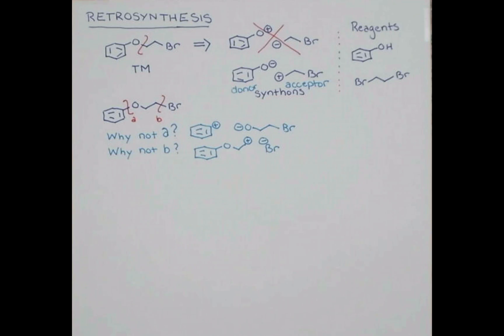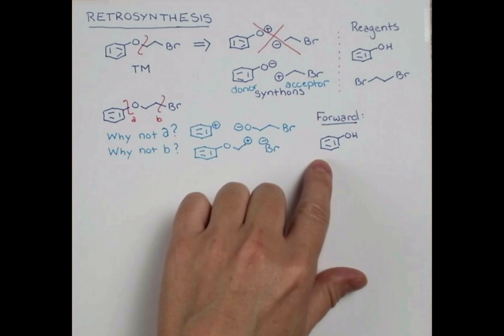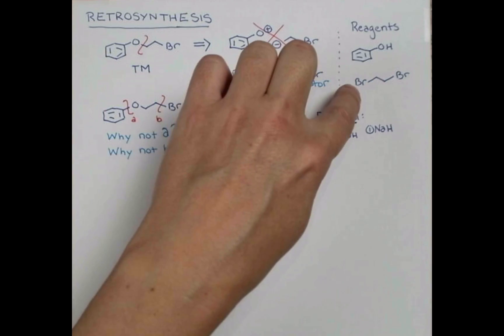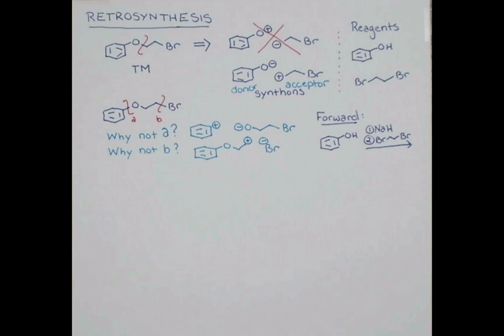Now we can draw a forward synthesis. Beginning with phenol, we can treat this with base, perhaps sodium hydride, and then add in our bromide. And this should give our target molecule.